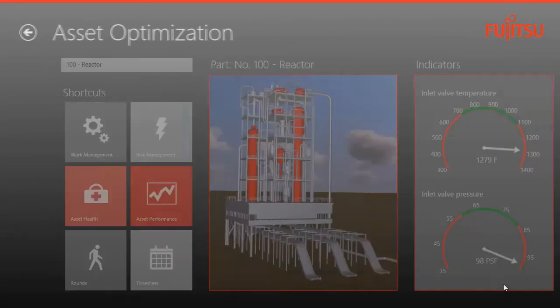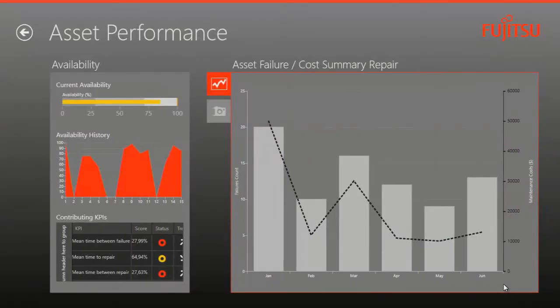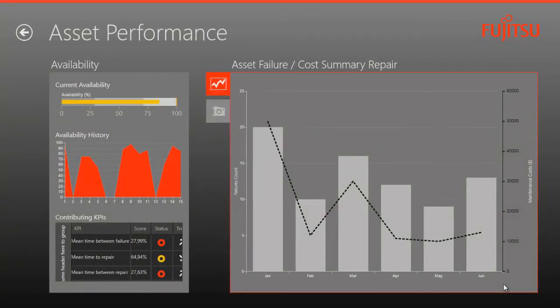Clicking on asset performance shows me historic KPIs that provide information supporting the resolution. I'm shown the historic performance of this component as well as the mean time between failures, mean time to repair, and mean time between repairs.